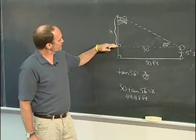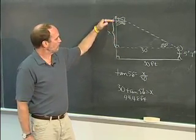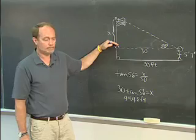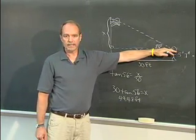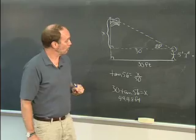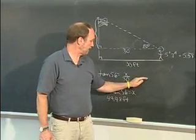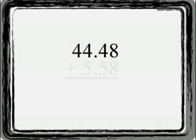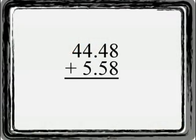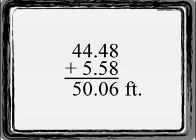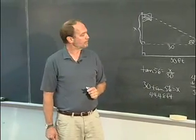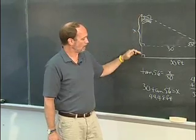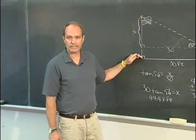So what that means is that the flagpole is 44.48 feet taller than the level with Eric's eyes. To find the total height of the flagpole, we need to finally add in the height Eric's eyes are from the ground. 44.48 plus 5.58 is a total of 50.06 feet. So this means that the flagpole is a total of 50.06 feet tall.